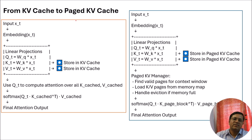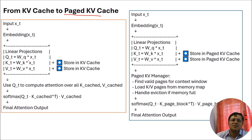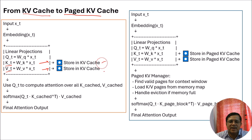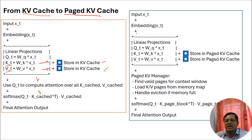There is another variety of KV Cache called Paged KV Cache. The difference between traditional KV Cache and Paged KV Cache is: in traditional KV Cache we are just using the cache storage for key and value linear projection matrices. But in Paged KV Cache, when we require such computations at a very large scale, managing and retrieving data from a very large cache is again a problem. So in that case we use a paging-based concept.